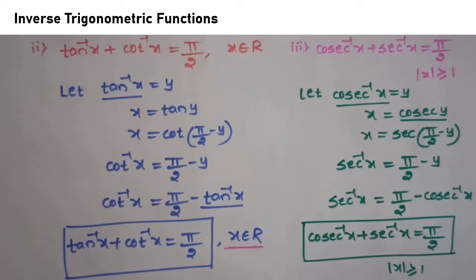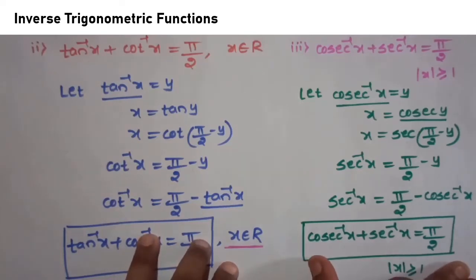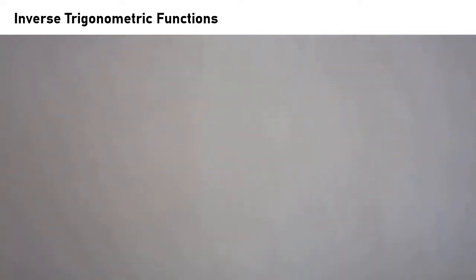So this is the fifth set of properties. sin⁻¹x + cos⁻¹x = π/2, tan⁻¹x + cot⁻¹x = π/2, and cosec⁻¹x + sec⁻¹x = π/2. These properties are very important; in exams they can ask you to prove these properties for 2 marks. Now we'll see how to use these properties.